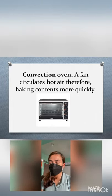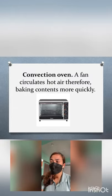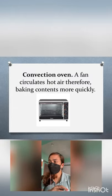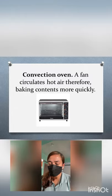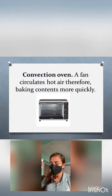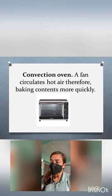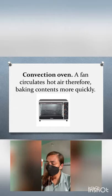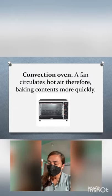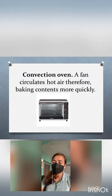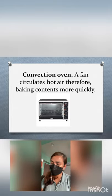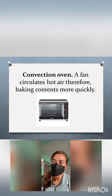Next, we have the convection oven. It has a fan that circulates hot air and therefore bakes contents more quickly. The convection setting is used for cooking, roasting, and baking meats, vegetables, casseroles, cookies, and pies. With convection roasting, meats like chicken and turkey can get a delicious, crispy outer layer while staying juicy on the inside.